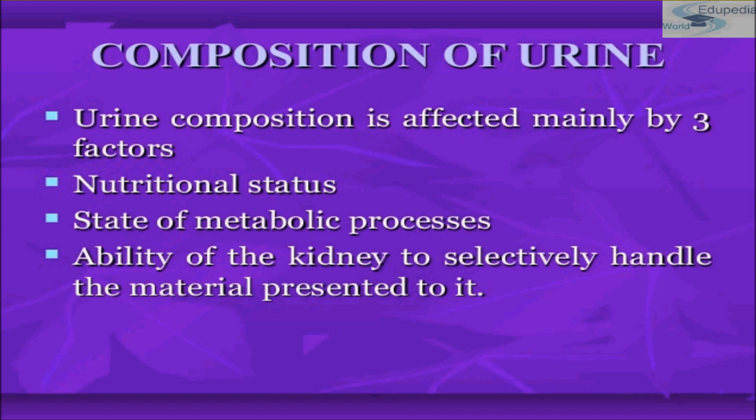Urine is yellow in color due to pigments such as urobilin and urochrome. Urochrome is produced from bile pigments — biliverdin and bilirubin. Urine is acidic in nature with a pH of about 4.8 to 7.5.